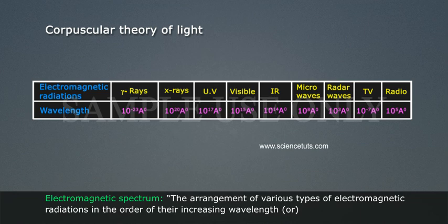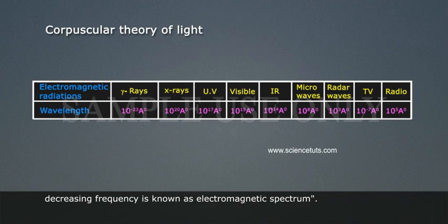Electromagnetic spectrum: The arrangement of various types of electromagnetic radiations in the order of their increasing wavelength or decreasing frequency is known as electromagnetic spectrum.